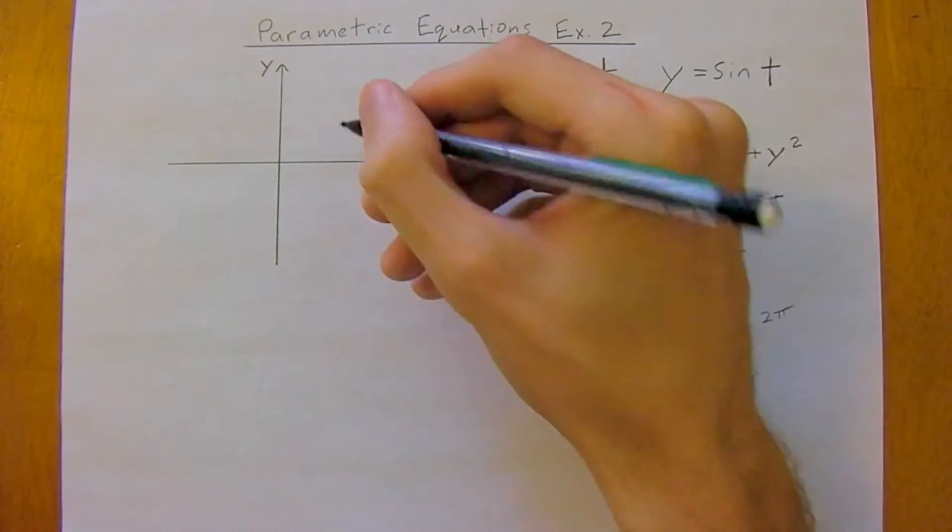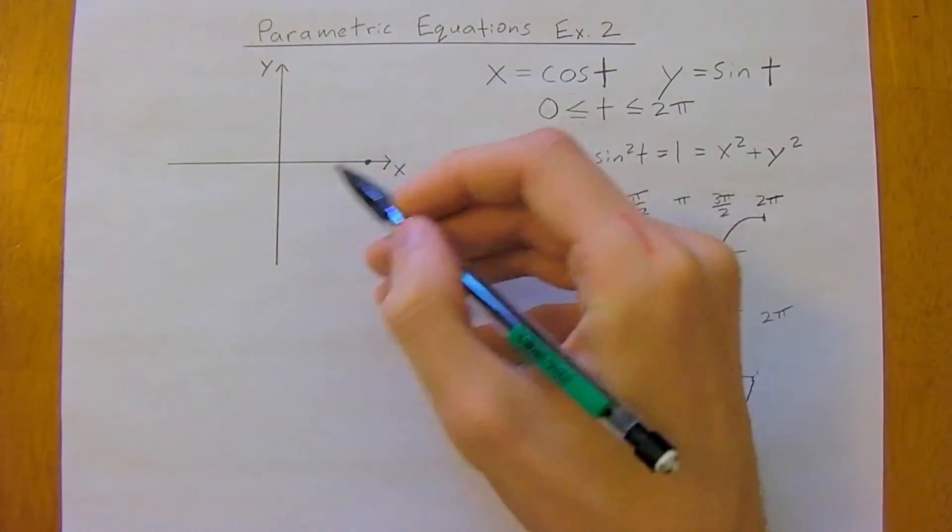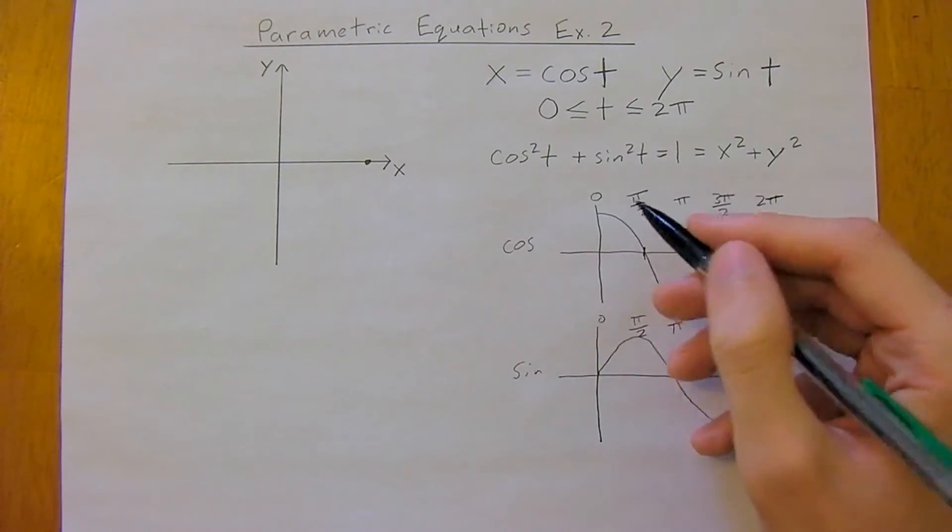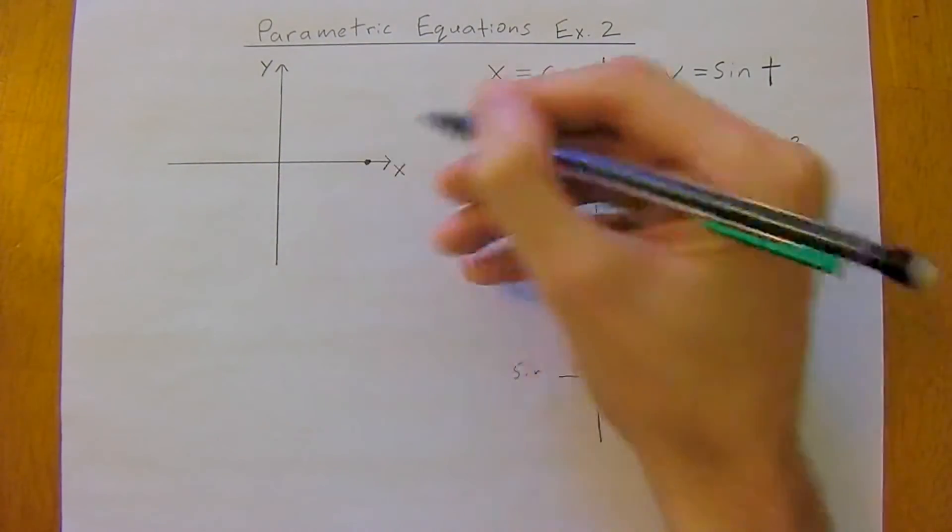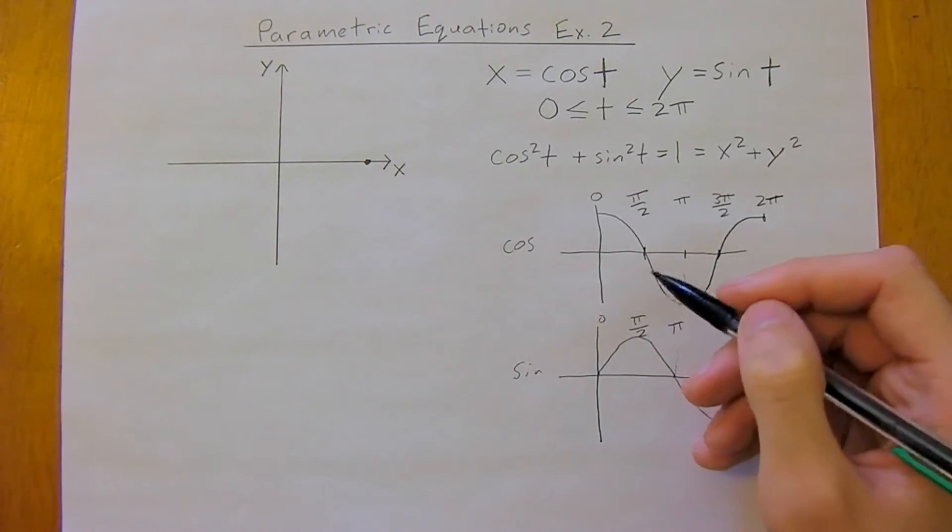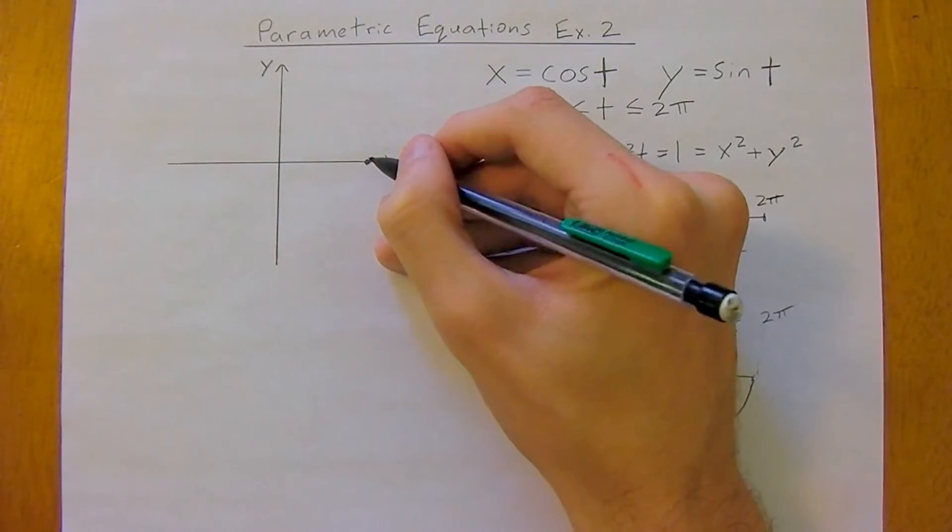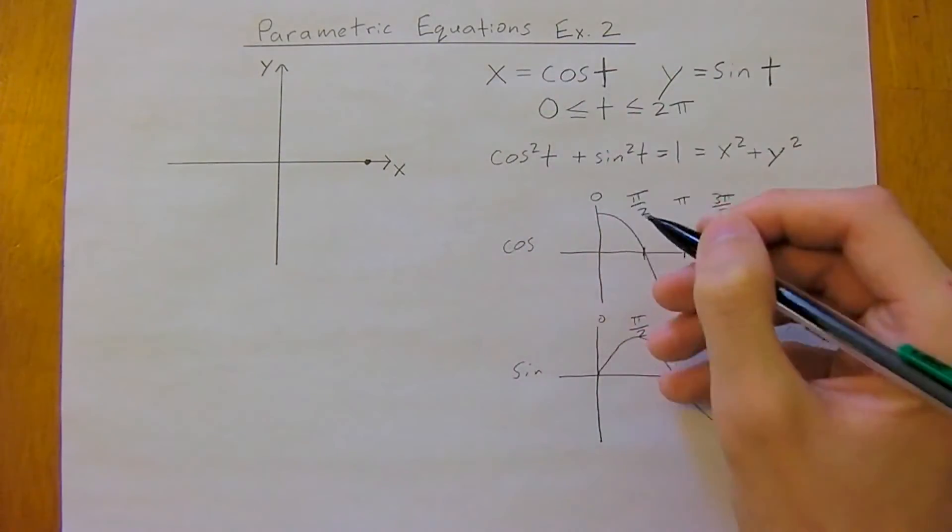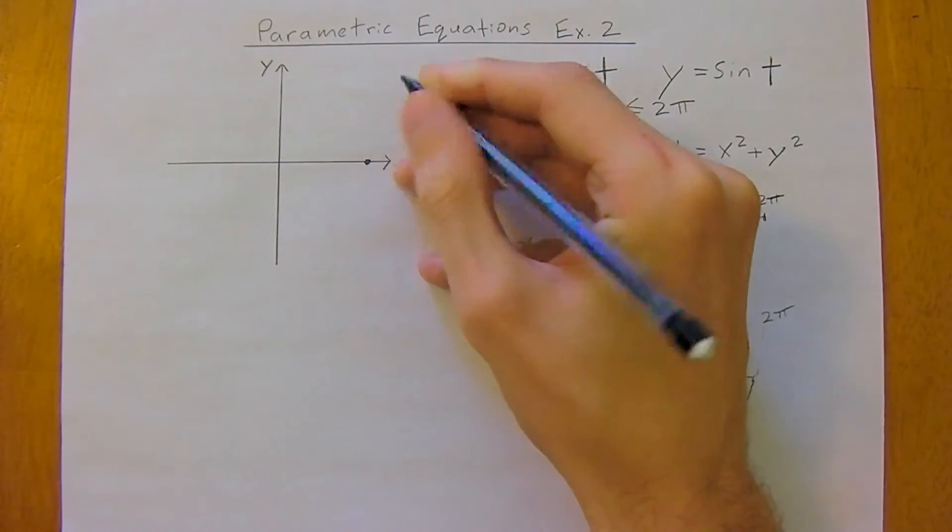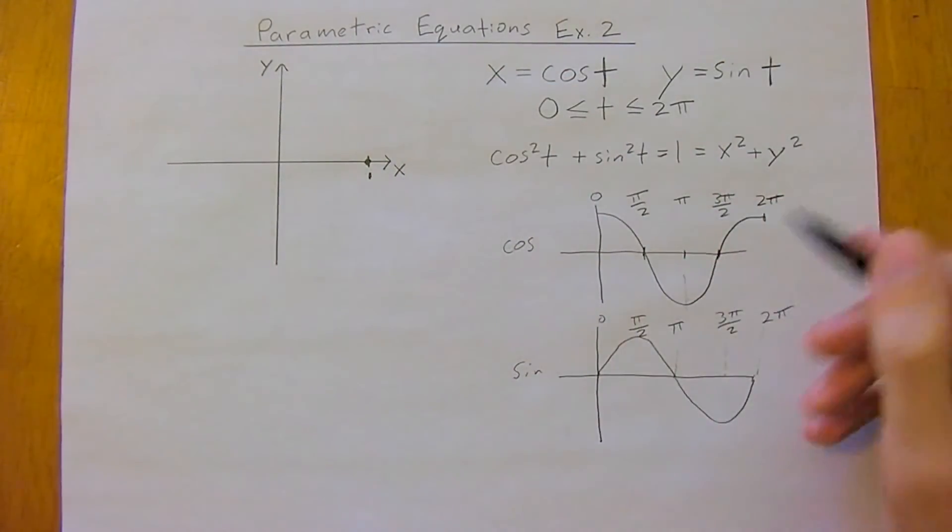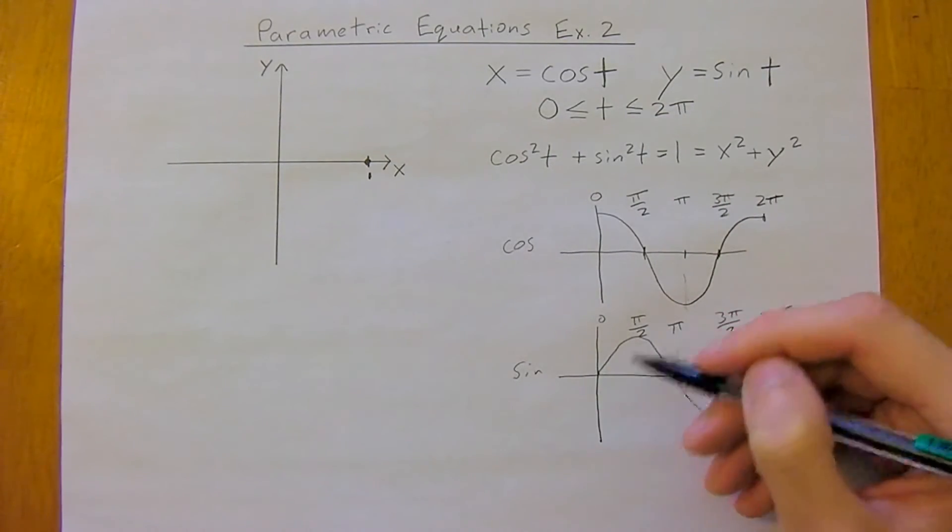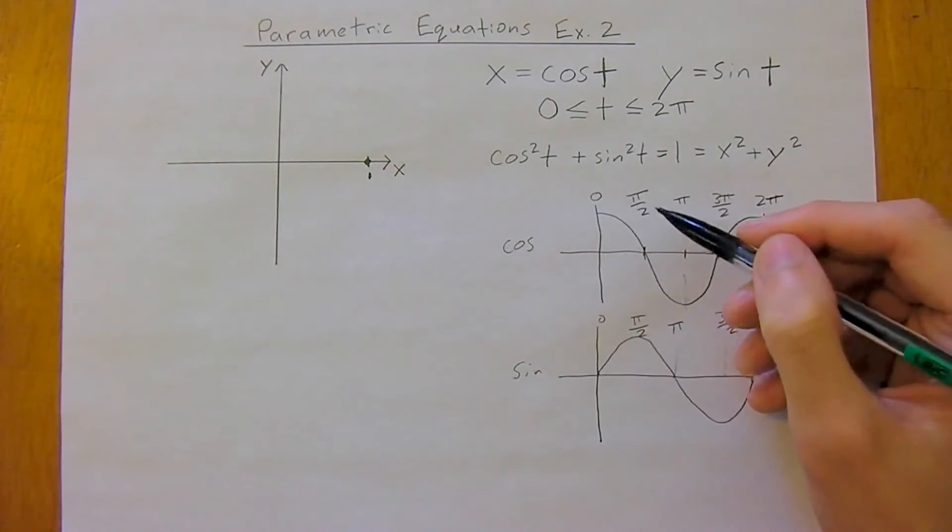So we're going to start tracing this out, working with our angle theta, and so cosine of 0 is going to be 1. So at time equals 0, we start at 1 for the x axis, where x is equal to 1. So this is going to be 1, and then sine, so the y is going to be equal to 0.